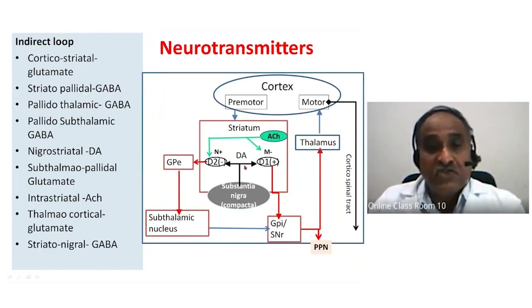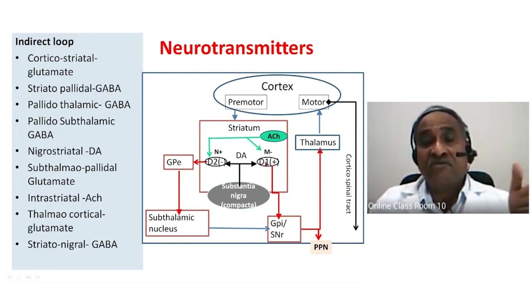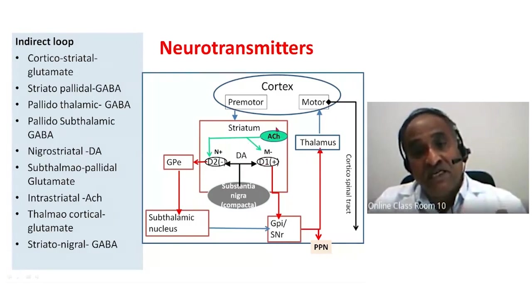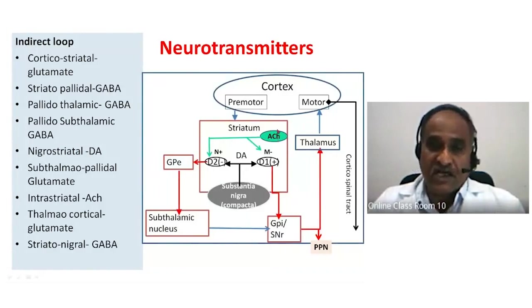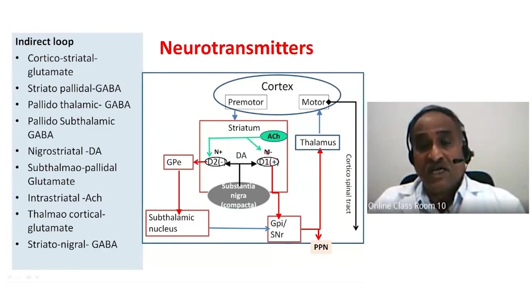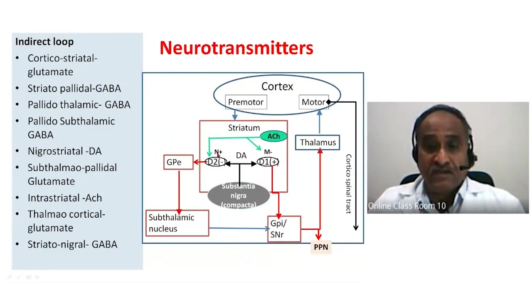This fine tuning is further adjusted by intrastriatal cholinergic neurons. These cholinergic neurons release acetylcholine, which exerts its action on muscarinic receptors and nicotinic receptors within the striatum.